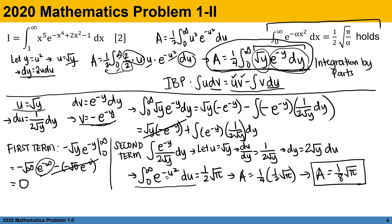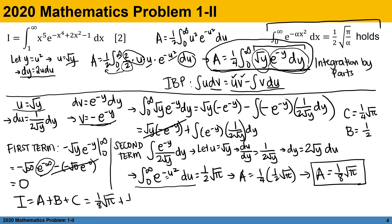From the previous results: C equals one fourth square root of pi, B equals one half, and A equals one eighth square root of pi. Therefore, our integral I equals A plus B plus C. Combining into a single expression: I equals one eighth of the quantity 4 plus 3 square root of pi.